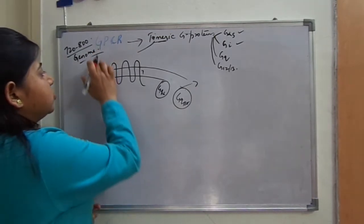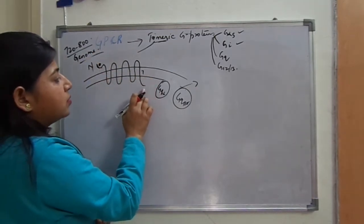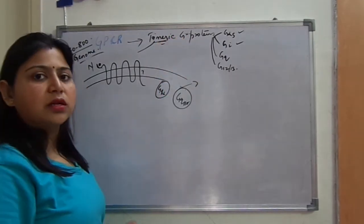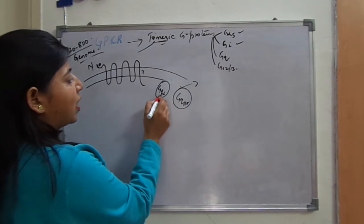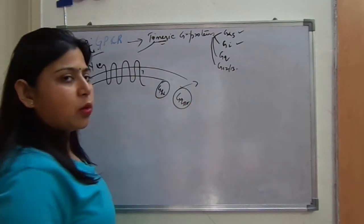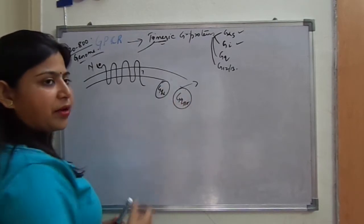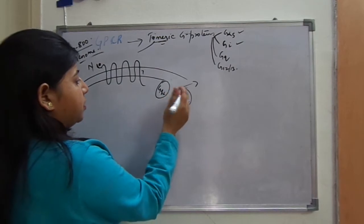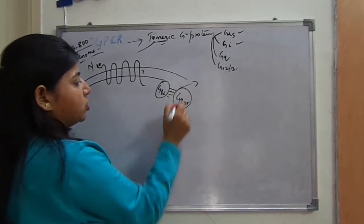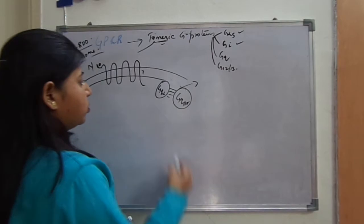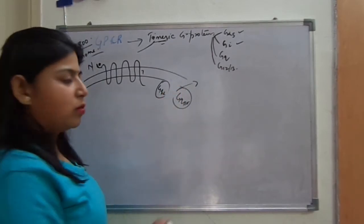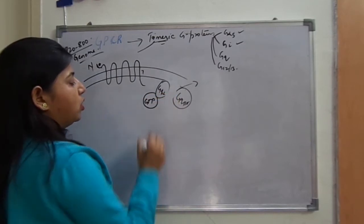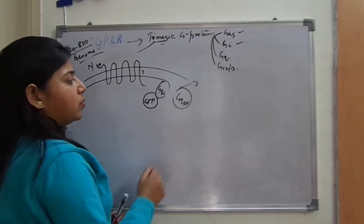When the signal comes and binds to the N-terminal, it will activate the G-Q class at the C-terminal. G-Q class is a trimeric G-protein containing three protein subunits: G-alpha, G-beta, and G-gamma, making it trimeric. When the signal comes and attaches, initially these three are bound to each other. Due to the signal, the binding is removed and instead of GDP — which was initially bound — GTP will come and bind to the alpha subunit.